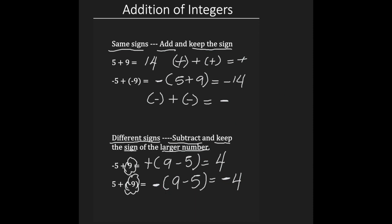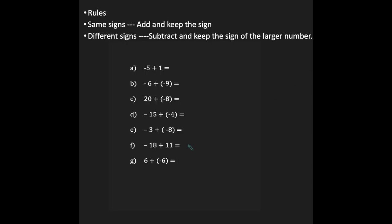Let's take a look at some examples. I have the rules at the top: same signs, add and keep the sign; different signs, subtract and keep the sign of the larger number. Negative 5 plus 1 — the signs are different, so I'm going to subtract and keep the sign of the larger. The 5 is the larger, so I'm going to keep the negative sign. My answer is negative 4.